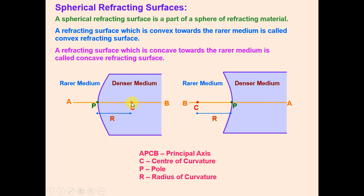When you complete the curvature you get a circle or sphere, and the center of that sphere is called the center of curvature. P is the pole — a point on the spherical surface. The radius of curvature is obtained by joining the pole with the center of curvature. You can join any point on the spherical surface with the center; that distance would be the radius of curvature, just as in a circle or sphere.